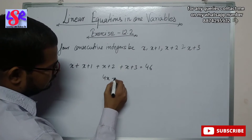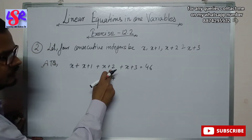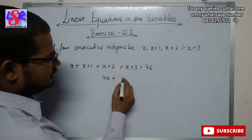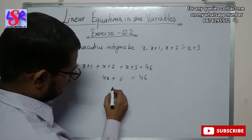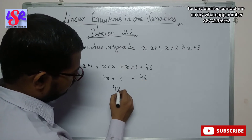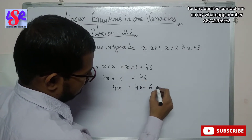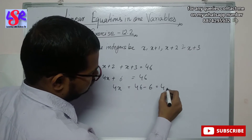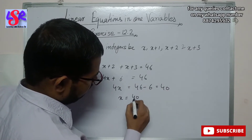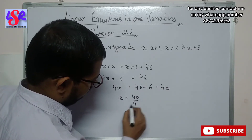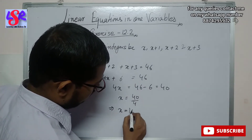We are going to solve for x. We have 4 terms, so 4x plus 1 plus 2 plus 3, that is 4x plus 6, equals to 46. Now this will be 4x equals to 46 minus 6, that is equals to 40. So x equals to 40 by 4.